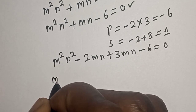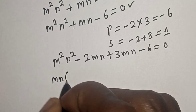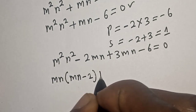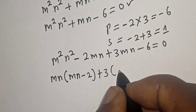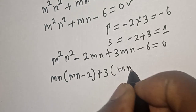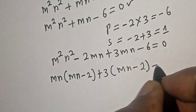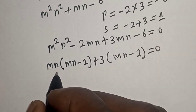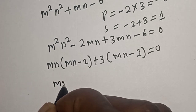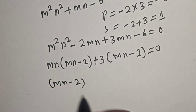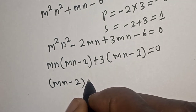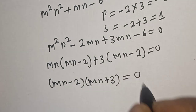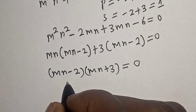Now we factor by grouping. Taking mn out of the first two terms and 3 out of the last two: mn(mn - 2) + 3(mn - 2) = 0. Then factoring out (mn - 2): (mn - 2)(mn + 3) = 0.